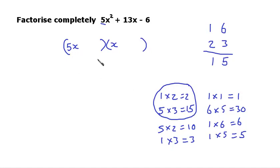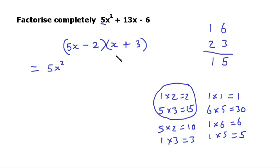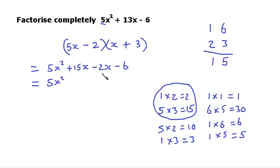So we've got 5x in our bracket already, which means the other bracket must have 3. And the 2 will go in the first bracket. We want to make positive 13x, which means we need the larger product to be positive, so we have plus 3, giving us plus 15x when multiplied out. And so this one must be negative 2. Multiplying out to check: 5x times x is 5x squared, 5x times 3 is plus 15x, negative 2 times x is negative 2x, and negative 2 times positive 3 is negative 6. Simplified: 5x squared plus 13x minus 6 — which is what we started with. So we've correctly factorised our expression.